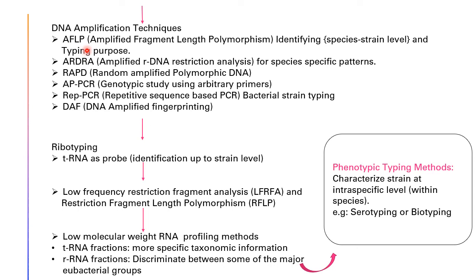DNA amplification techniques include AFLP — amplified fragment length polymorphism — and RFLP. These identify species and strain level and are used for typing. ARDRA — amplified rDNA restriction analysis — is done for species-specific patterns. RAPD is random amplified polymorphic DNA. AP-PCR uses arbitrary primers for genotypic study. Rep-PCR is repetitive sequence-based PCR used for strain typing. DAF is DNA amplified fingerprinting.